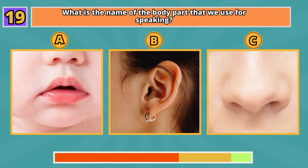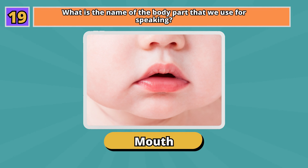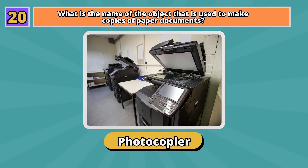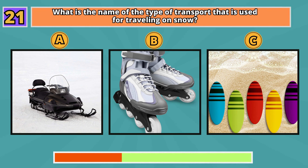What is the name of the body part that we use for speaking? Mouth. What is the name of the object that is used to make copies of paper documents? Photocopier.